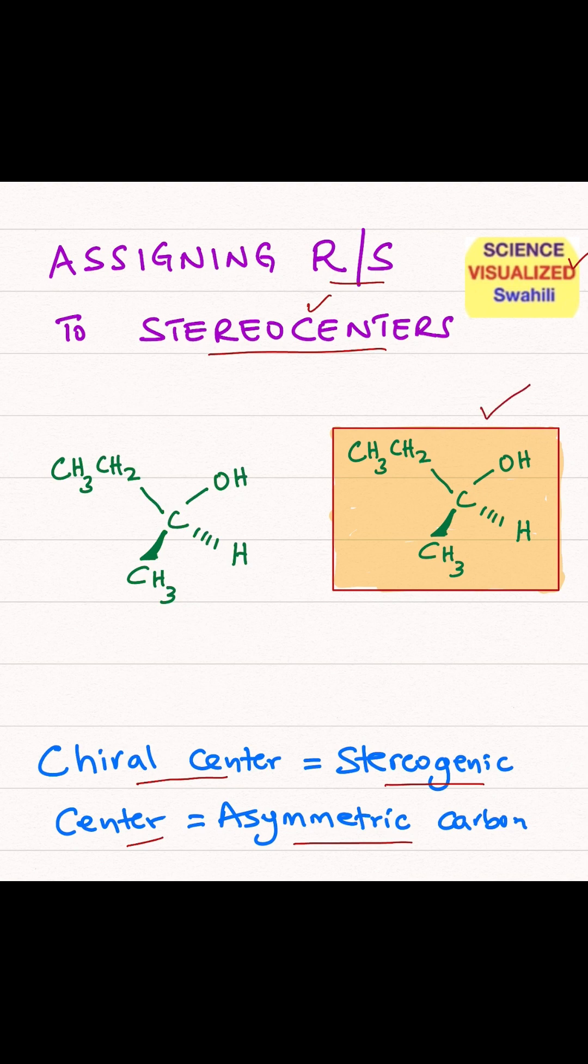If we look at this structure here, we see that that carbon is connected to an OH group, a hydrogen, a CH3, and a CH2CH3. So that's a chiral center.